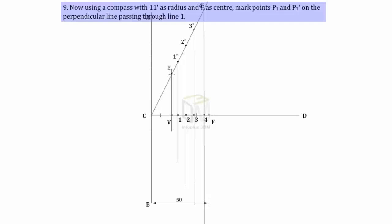Now, with 1, 1 dash as radius and F as center, mark points P1 and P1 dash on the perpendicular line passing through 1 on either side of the axis.